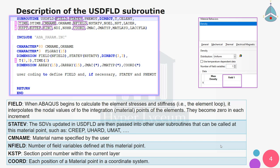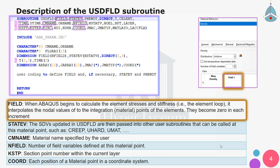Here you can see the parameters of the USDFLD subroutine needed for modeling FGMs. FIELD is a variable we use to define our material, and NFIELD is the number of fields. We develop our material equation using the field variable. Note that Abaqus begins to calculate element stresses and stiffness by interpolating the nodal values using the integration material points of the elements, so all field variables are defined at integration points.